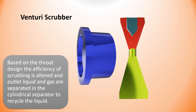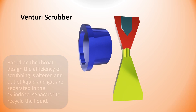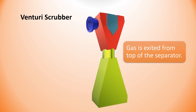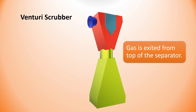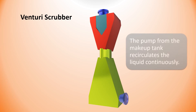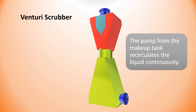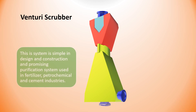The outlet liquid and gas are separated in the cylindrical separator to recycle the liquid. Gas exits from the top of the separator, and the pump from the makeup tank recirculates the liquid continuously. This system is simple in design and construction and is a promising purification system used in fertilizer, petrochemical, and cement industries.